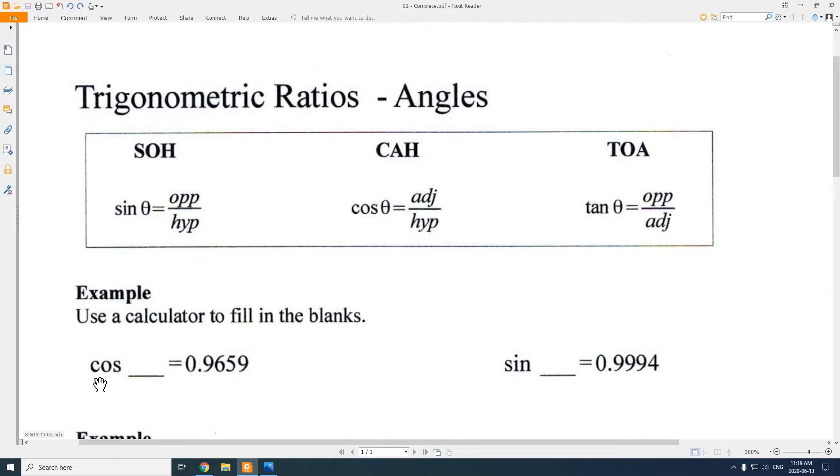Let's do a quick example here. First one says cos of theta, cos of some angle equals 0.9659. I want to figure out what is that angle. This is telling me that the ratio between the adjacent and hypotenuse lengths is 0.9659. So in other words, adjacent is a little bit smaller than hypotenuse if I was to get that fraction. But what's the angle?